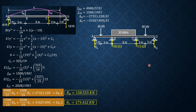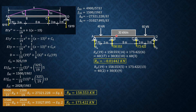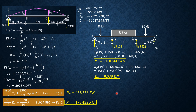Applying the reactions, we sum moments about D to solve for RA: RA times 19 plus 158.553 times 14 plus 173.422 times 6 equals 40 times 17 plus 30 times 8 times 10 plus 60 times 10. Then summing moments about A for RD: RD times 19 plus 158.553 times 5 plus 173.422 times 13 equals 40 times 2 plus 30 times 8 times 9 plus 60 times 16. So RD equals 8.039 kN.